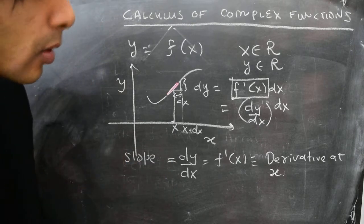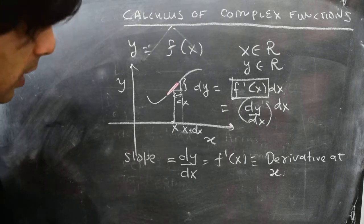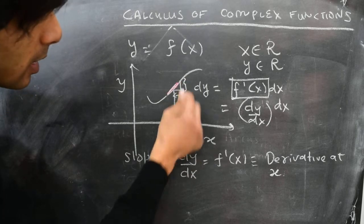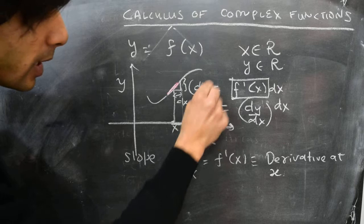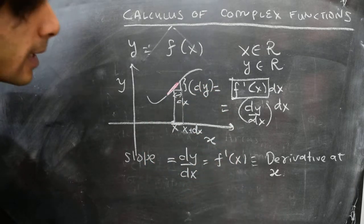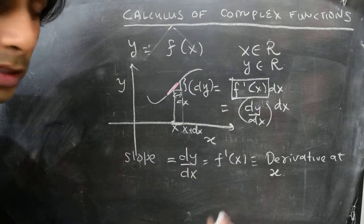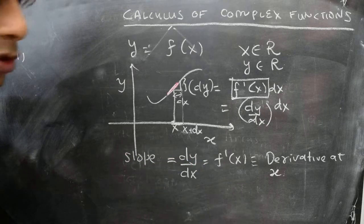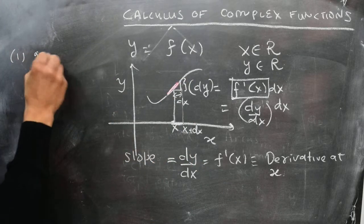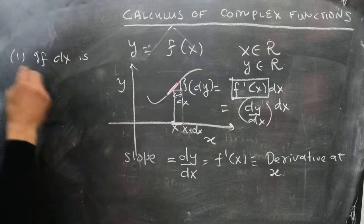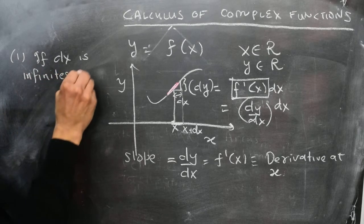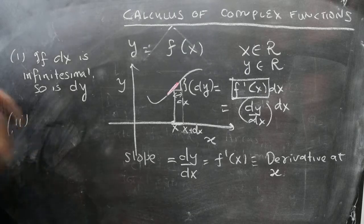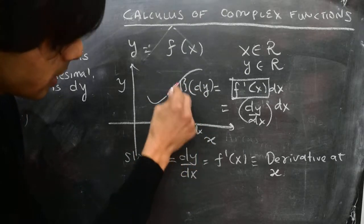There are a couple of things that go into the definition of this derivative. First, we assume that if we move a small distance dx, then the change in f, which is dy, is also small. If the derivative of a function exists, we are assuming the function is continuous around the point x. The second idea is that the derivative is independent of direction, so the derivative at x is unique.